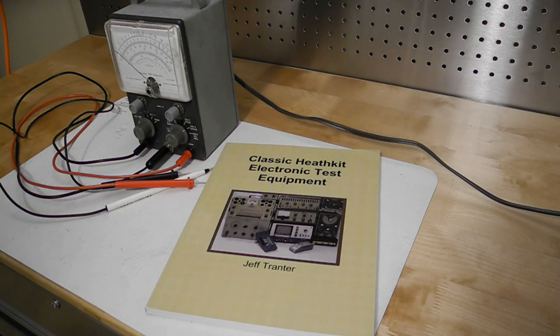Separate chapters cover the major categories of component testers and substitution boxes, frequency counters, meters, oscilloscopes, power supplies, signal generators, tube testers and checkers, and miscellaneous test equipment. Each chapter includes one or more in-depth sections that look at a representative model from my Heathkit collection, covering its features, operation, and notable quirks or trivia.